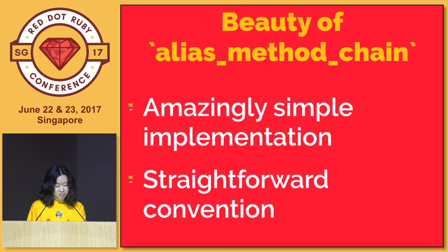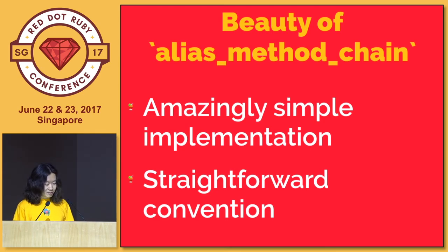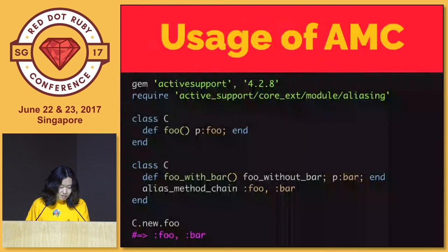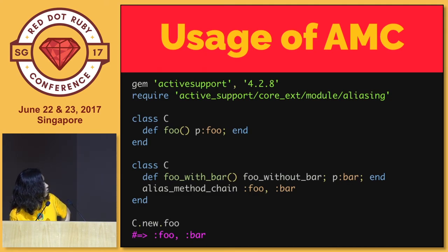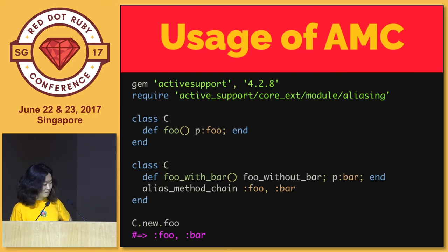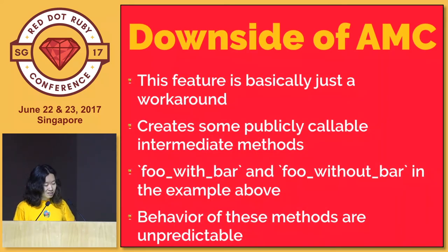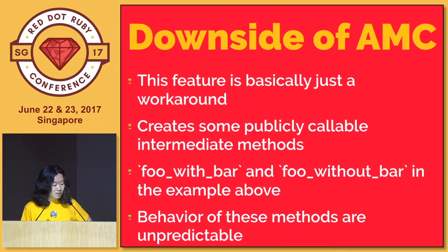It was a very beautifully simple implementation. Not just super useful, it's very simple indeed. This is how we use the feature. For example, where there's a method called foo, you can extend foo's behavior by defining foo_with_bar and calling foo_without_bar from inside. But this feature actually had a little bit of a pitfall, because it was not a language core feature - it was just a workaround. So it creates some intermediate methods like foo_with_bar and foo_without_bar, which are publicly callable from outside.